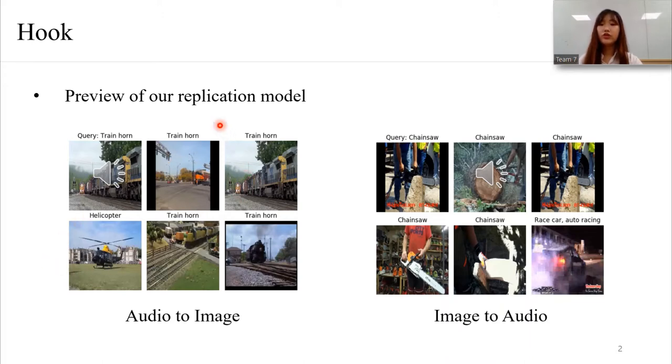Otherwise, if you give chainsaw image to the network, you can receive these audio files which are likely to sound from the image. It means that the network can figure out correspondence between audio and image. The final goal is to find where the sound is from in the video utilizing this correspondence.